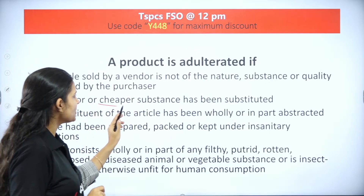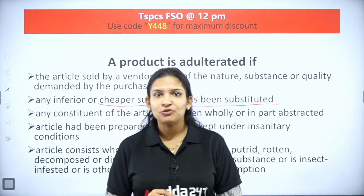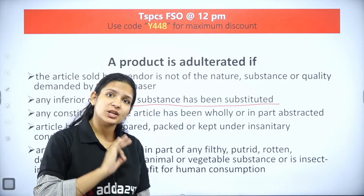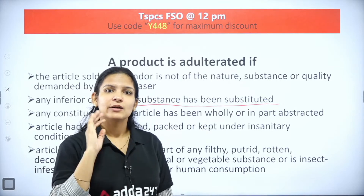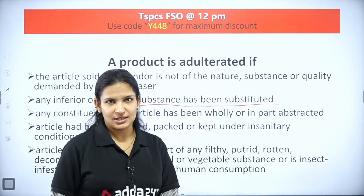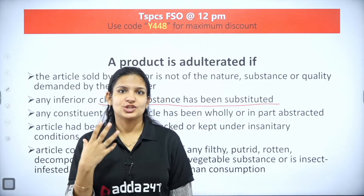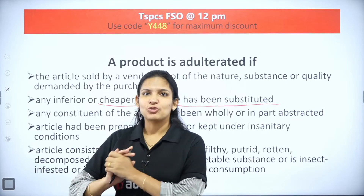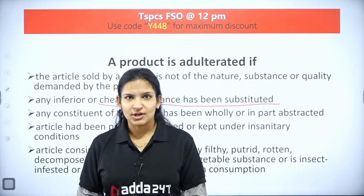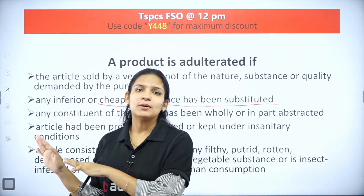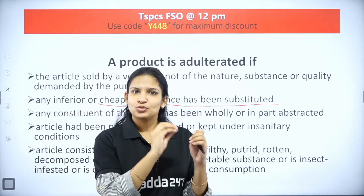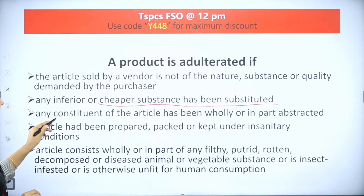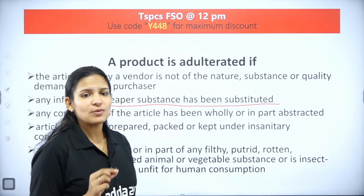The second condition is if an inferior or cheaper substance has been substituted. For example, adding water to milk - water is cheaper than milk. Or adding chicory seeds to coffee - chicory seeds are cheaper than coffee. Any substance of lower price value that is added to the product counts as adulteration.